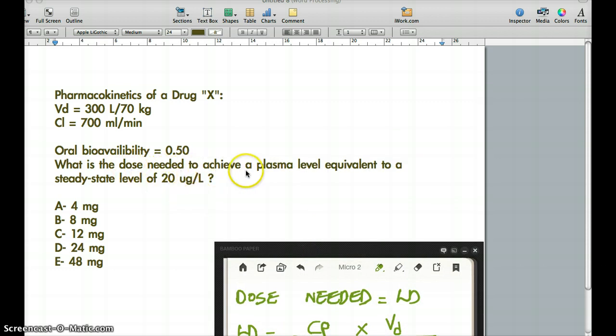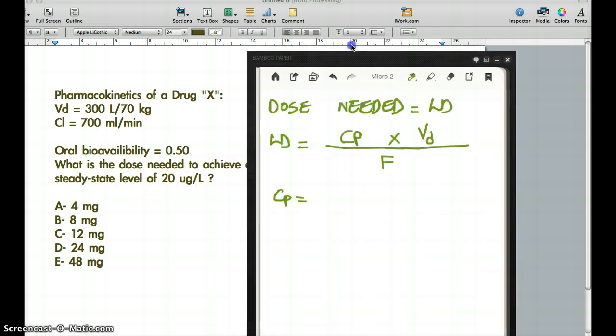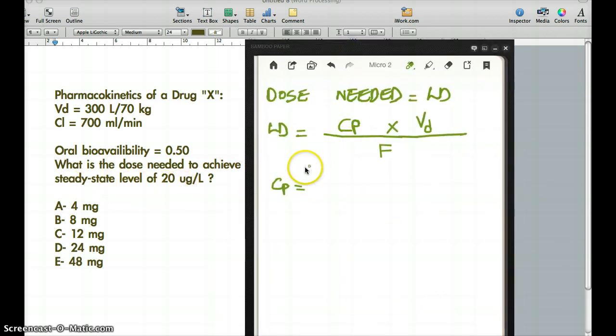CP is going to be 20 microgram per liter. Because what is the dose needed to achieve a plasma level equivalent to a steady state level of 20 microgram per liter? So target plasma concentration is the concentration at steady state. So this is actually 20 microgram per liter. But do keep in mind that we have to convert it into milligrams. So I'm going to just do it right now. This is going to be 20 divided by 1000 milligram per liter.